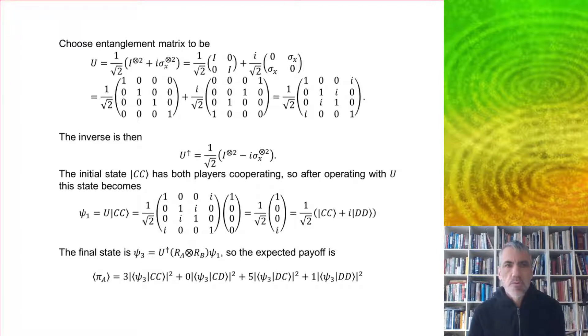As an example, we can choose the entanglement matrix to be this rather complicated looking fellow here. For the initial state, if we start with both players cooperating, after operating with U we get something like this, which you'll notice is now entangled because it's a mix of CC and DD.